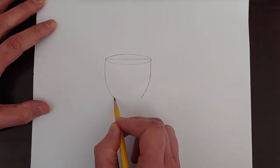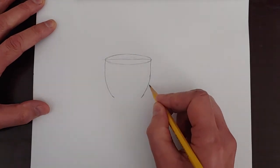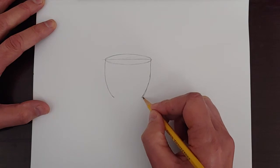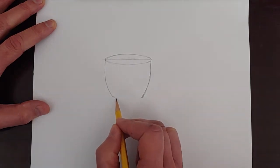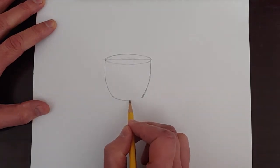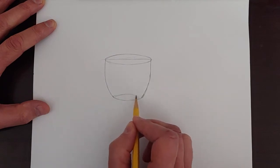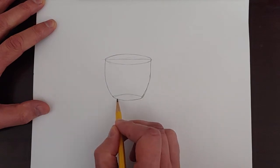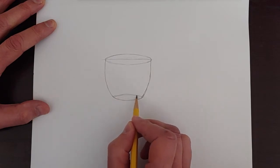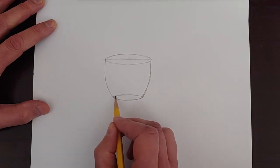And the bottom of the cup is also an oval. But we're not going to see the whole oval. We're just going to see this part of it. But, you know, it kind of helps you to draw the whole oval. If we could see through the cup, we would see the bottom like that. See that?